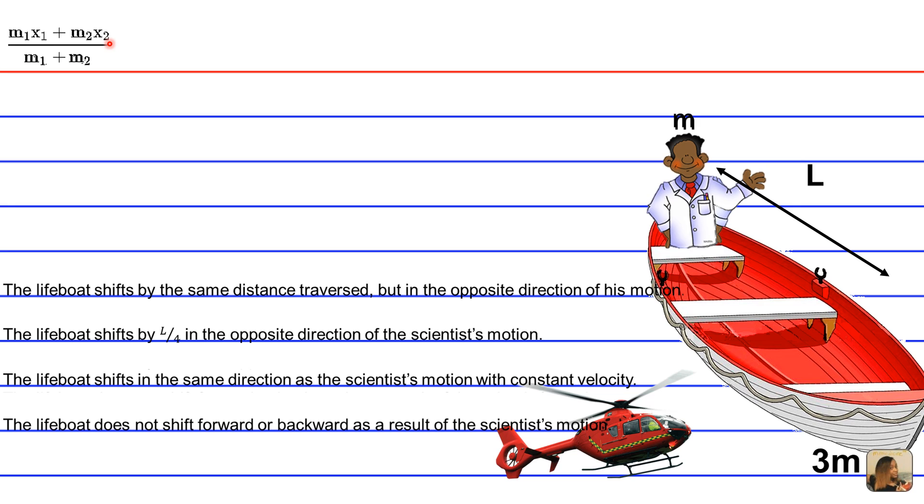So what we're going to do is find the center of mass for the scientist's first position. So we see that the scientist has a mass of m and a distance of 0.